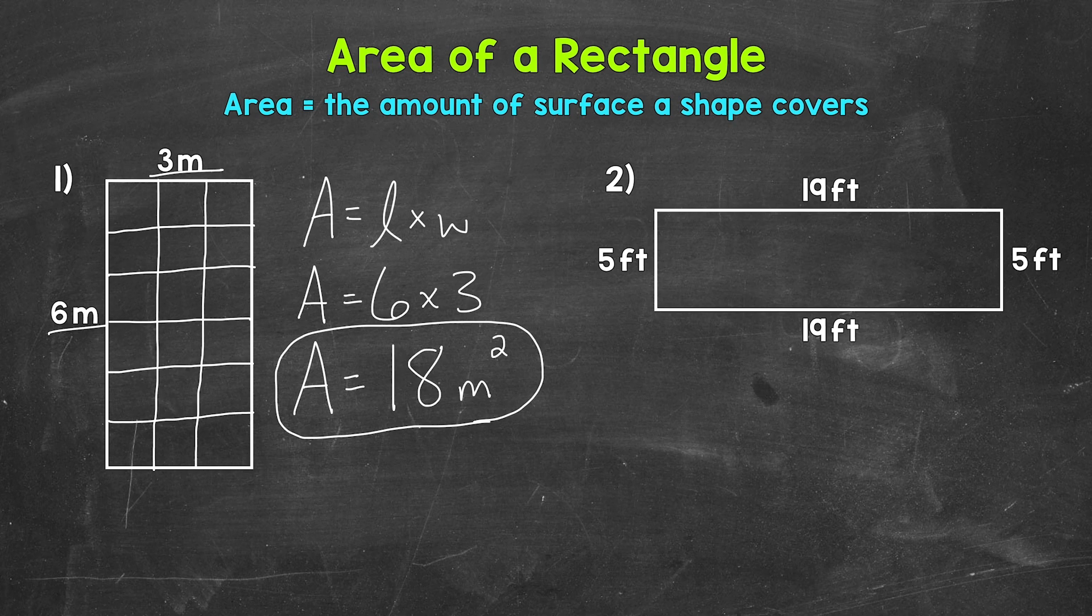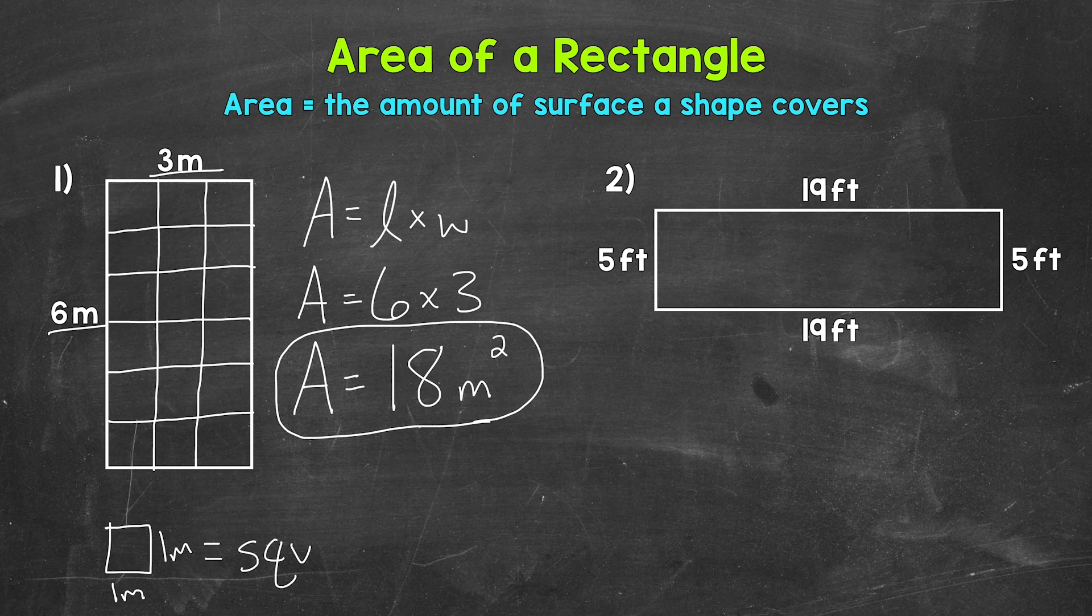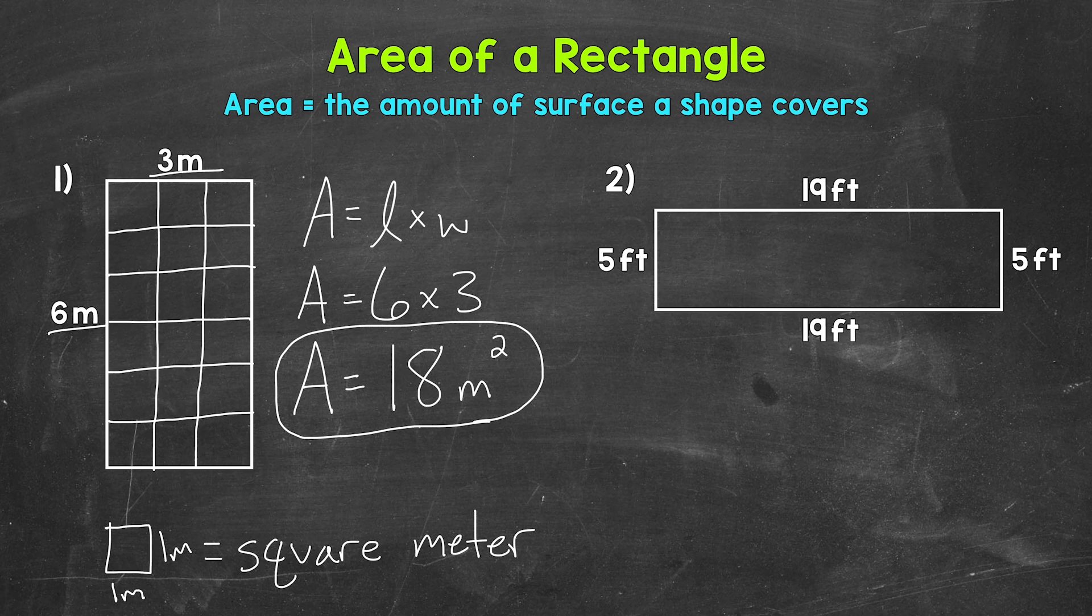That just means that each square is 1 meter by 1 meter. And this is a square meter. When we find area, we find how many square units something covers. So for number 1, how many square meters does this rectangle cover?